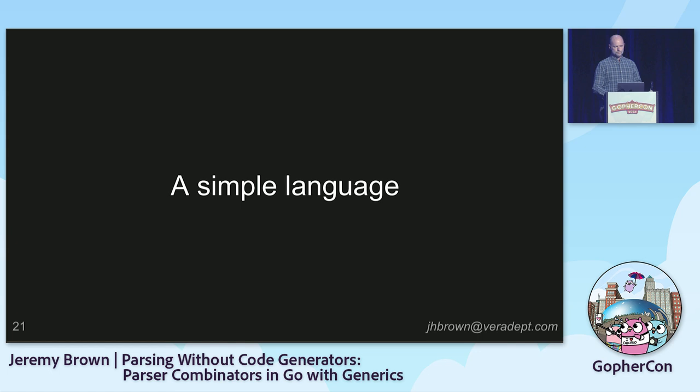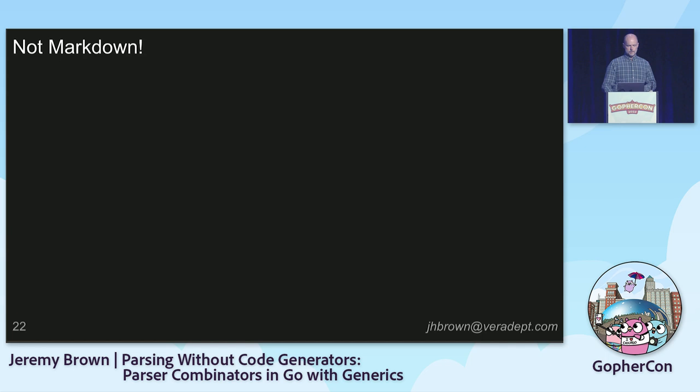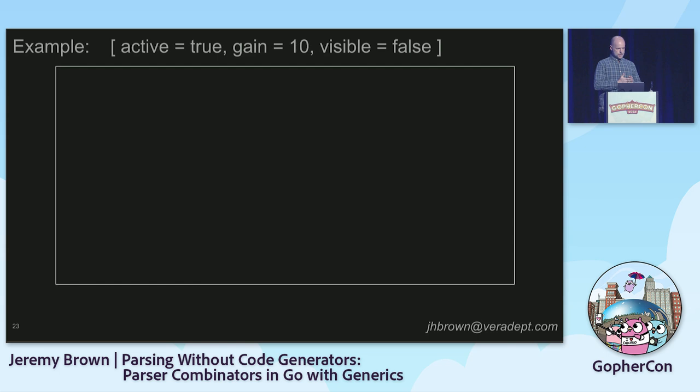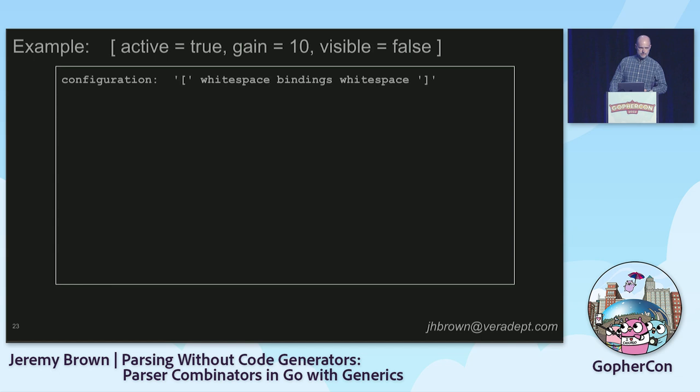Not markdown, by the way — markdown has stuff like this. I'm not going to inflict any of that on you. If you want to experience it, look up the CommonMark spec and then cry. Here's what we're actually going to do: a very simple configuration language. It's just square brackets around a bunch of name-equals-value stanzas separated by commas. You could do this one quite easily with GoYACC. A grammar for that might look something like this — a configuration is brackets around some whitespace and bindings. Bindings is either one binding or a binding, whitespace, comma, binding, and so on.